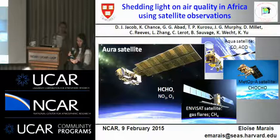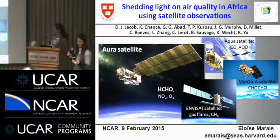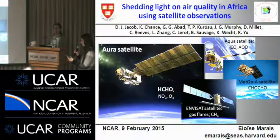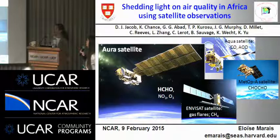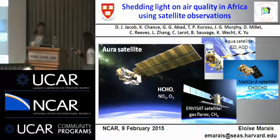Eloise completed her undergrad and master's degree in physics and analytic chemistry in South Africa and was awarded the Fulbright Scholarship to pursue her PhD in the U.S. She has worked with Daniel Jacobs as a graduate student and continues her work and research in Africa air quality as a postdoc in his group. Today, she wants to talk about shedding light on air quality in Africa using satellite observations.